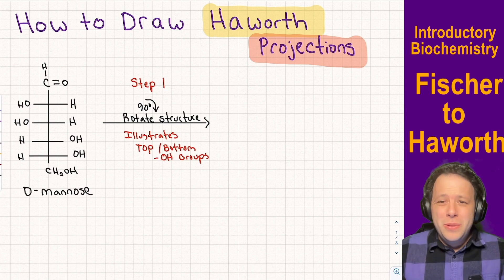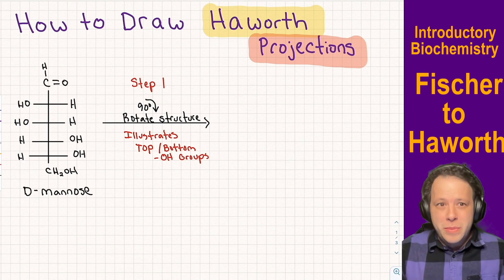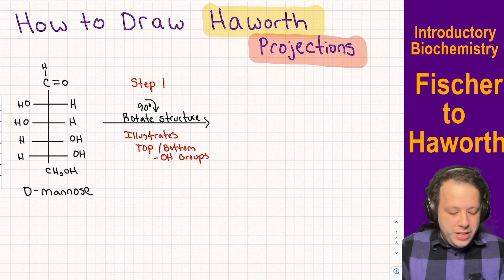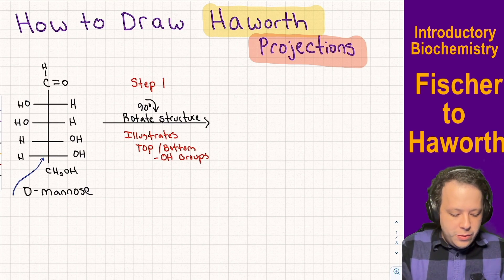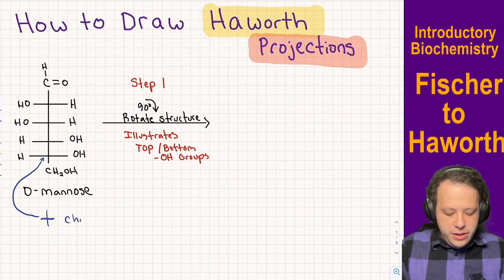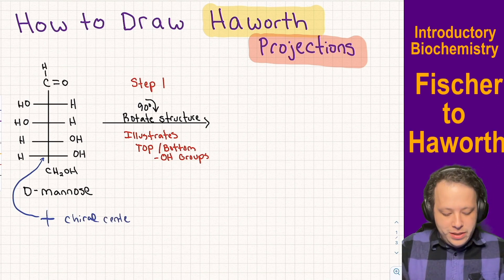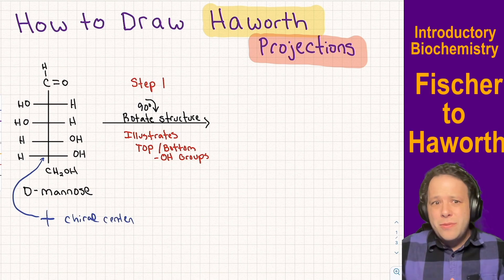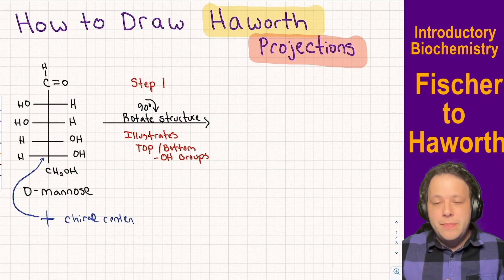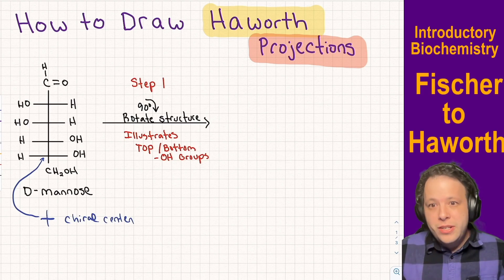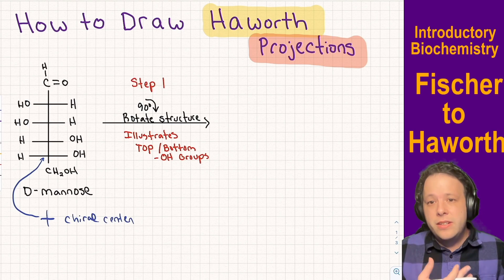Whenever we have a Fisher projection, the entire idea behind this was to show chirality of a molecule. Whenever we represented different intersections with crosses, this would tell you that we have a chiral center. For this particular one I have D-mannose — you can see that there are four chiral centers on this one.